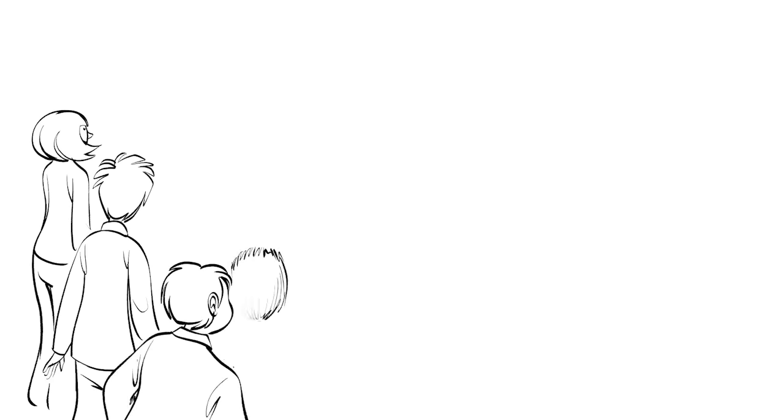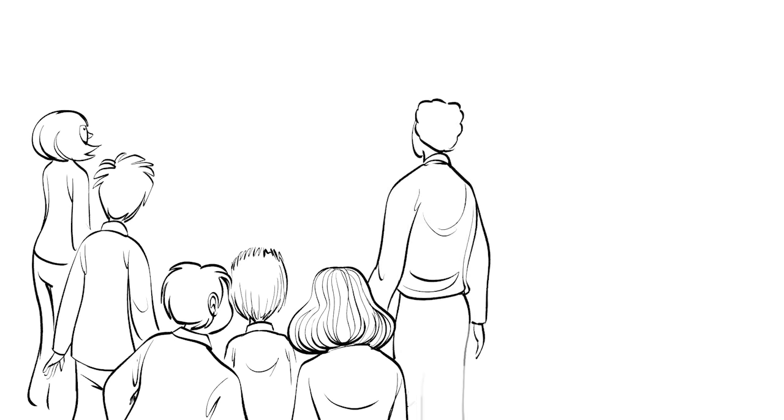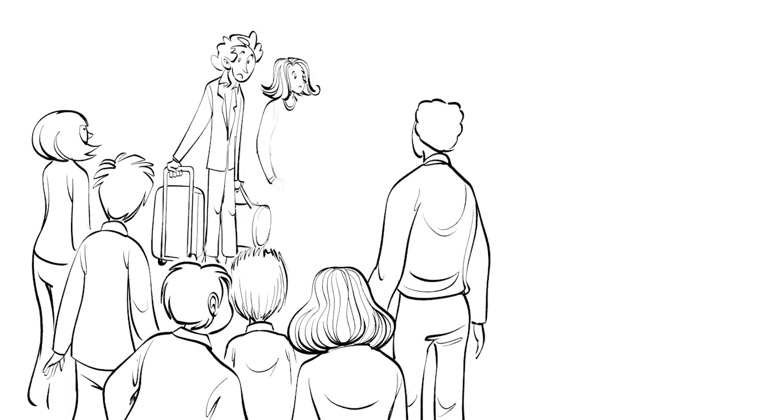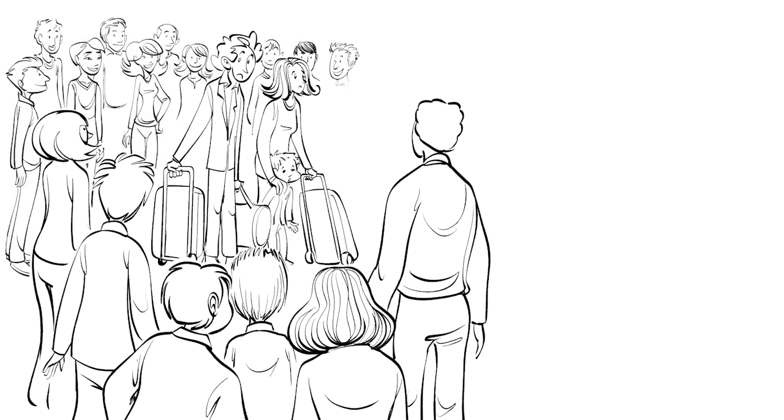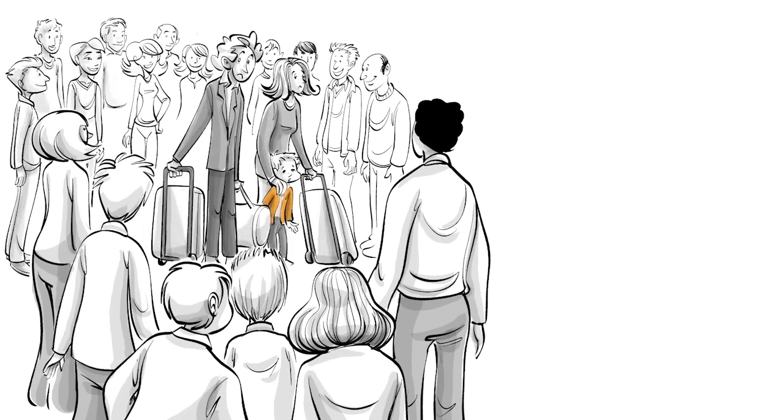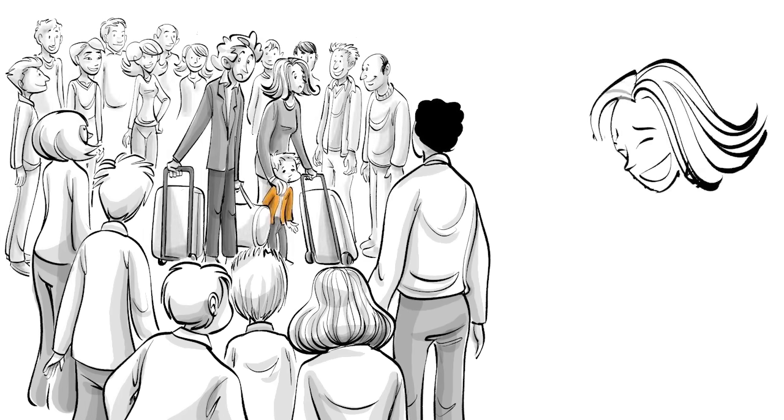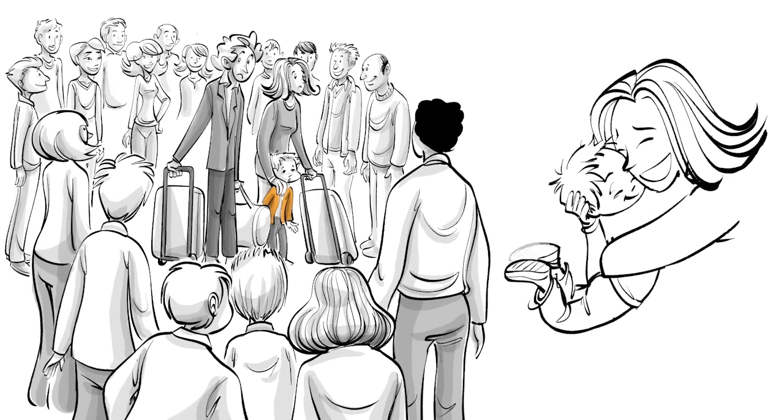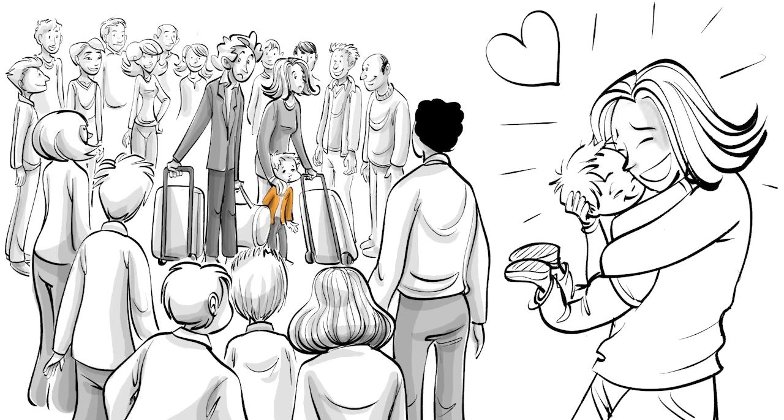Bronfenbrenner made a critical contribution to our realization that parent-child relationships do not exist in a social vacuum, but are embedded in the larger structures such as community, society, and culture. In order to develop well, he allegedly said, every child needs at least one adult who is irrationally crazy about him or her.